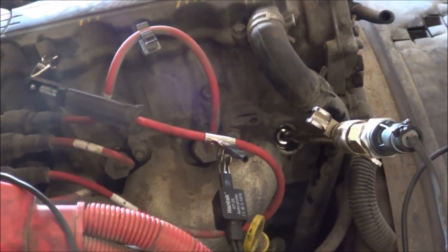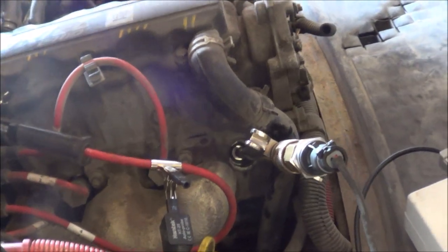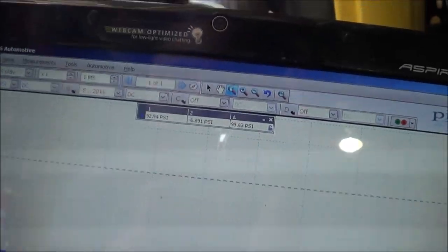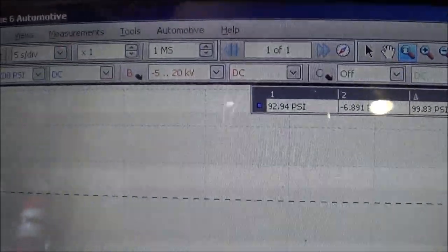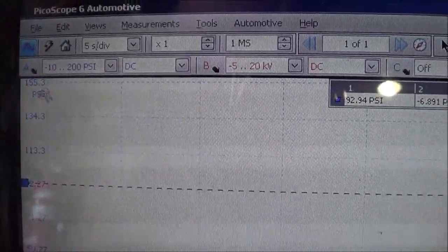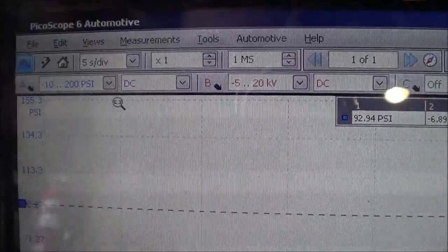All right, so let me show you the hookup right now. So Pico scope connected to USB, and the setup for the scope is channel A, like I said, is my pressure transducer.